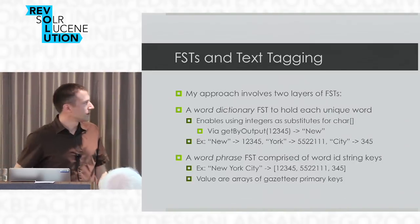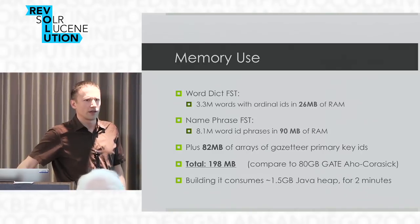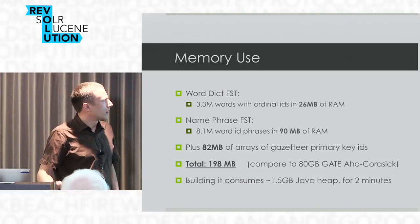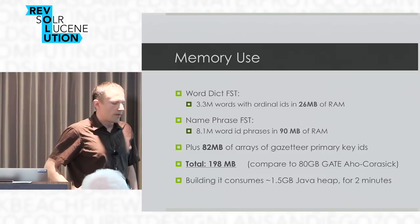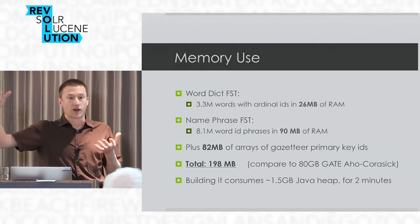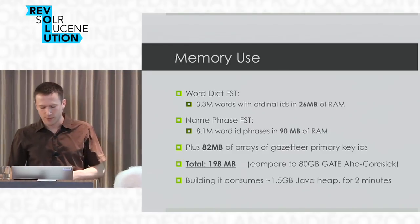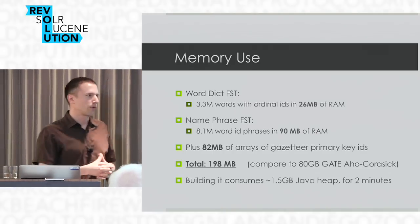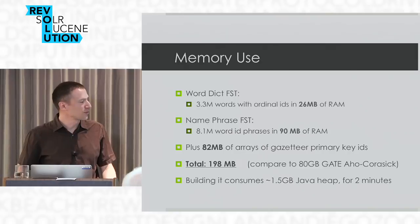The results were awesome compared to the 80 gigabytes for the GATE implementation. The word dictionary — all 3.3 million unique words — took about 26 megabytes of RAM. The name phrase FST was 90 megabytes. And there's about 82 megabytes of IDs pointing back to gazetteer primary keys. So the sum total was about 200 megabytes. I was super excited to see 200 megabytes, because the problem I was trying to solve was to be much better than 80 gigs — and I was super pleased to see that.